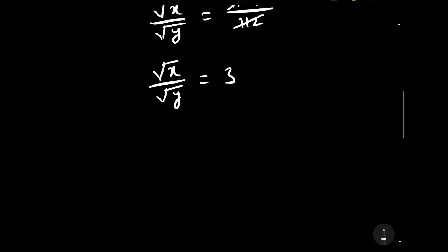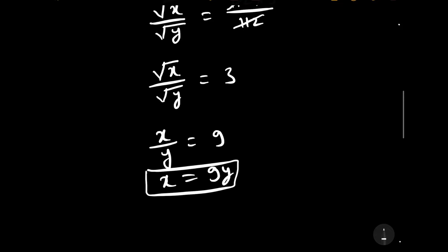Squaring both sides, we get x over y equals 9, therefore x equals 9y. Now we have the relation x equals 9y.